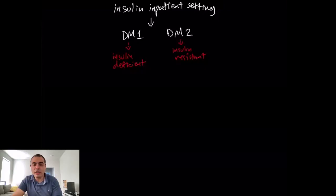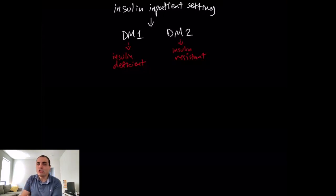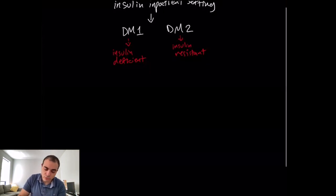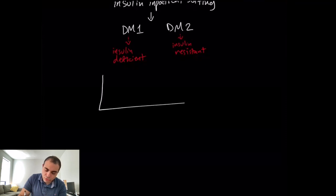For anybody trying to manage their insulin, you have to think in your mind: what am I trying to do exactly? What is the normal physiology of insulin? The normal physiology of insulin is the following.